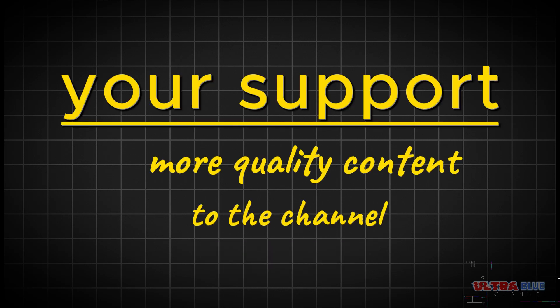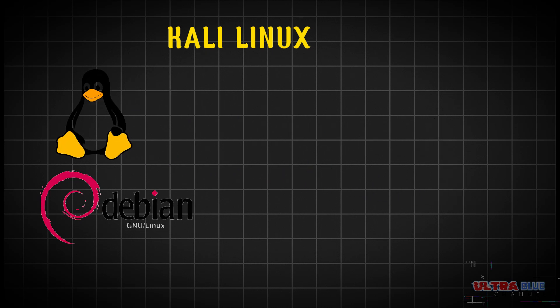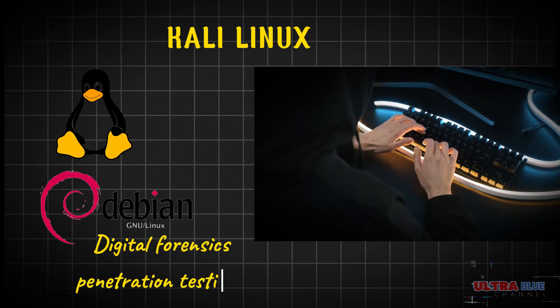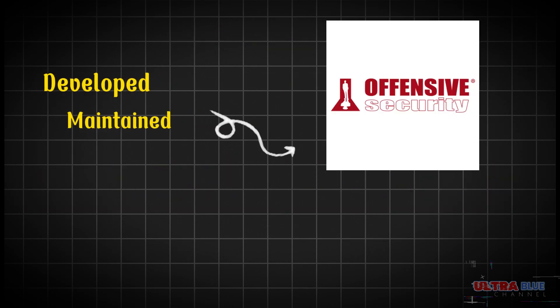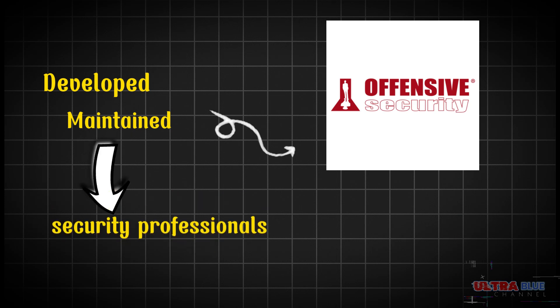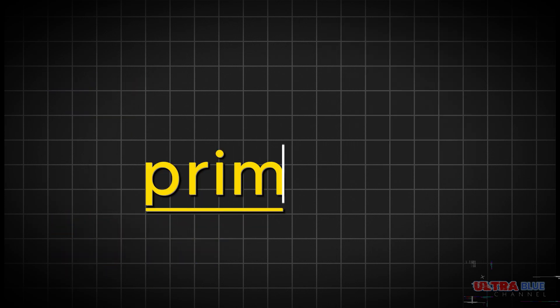Now let's get started. Kali Linux is a Debian-based Linux distribution designed for digital forensics and penetration testing, also known as ethical hacking. It was developed and maintained by Offensive Security and is widely used by security professionals and ethical hackers. Its primary goal is to provide a robust environment for performing various security-related tasks.